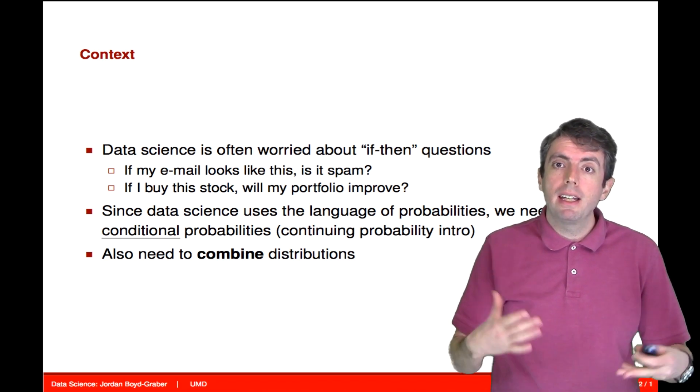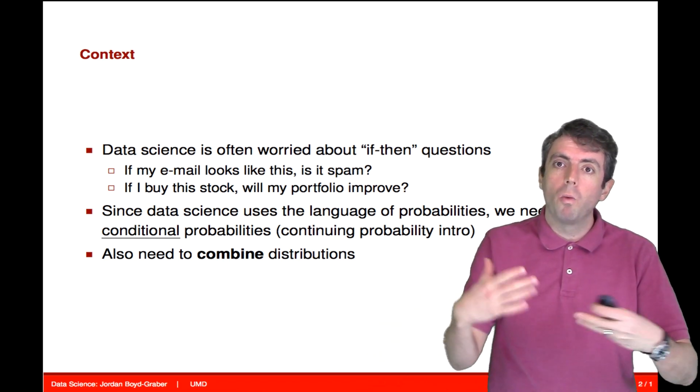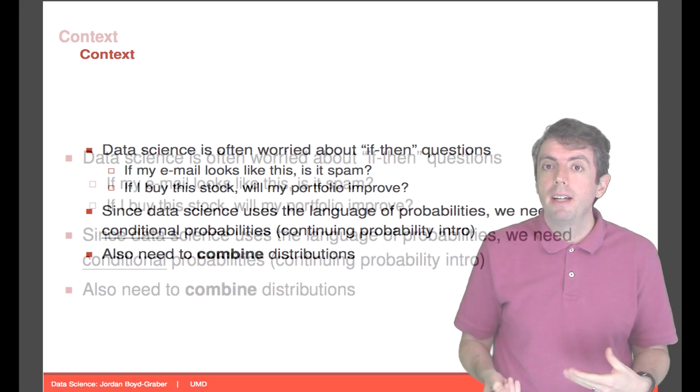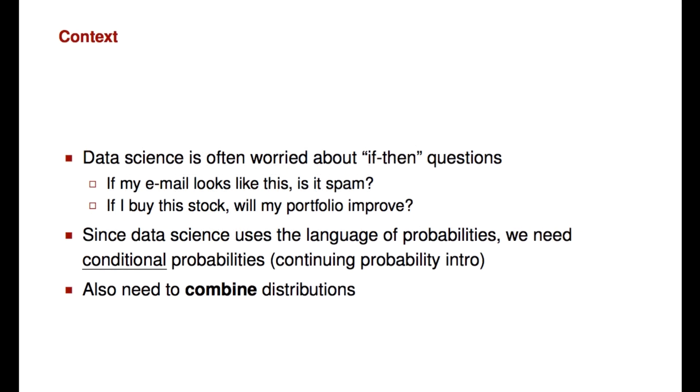For example, if I do action x, what will the world of tomorrow look like? If I write email that talks about a great deal, does that mean it will get flagged as spam? If I buy this stock, will I make more money on my portfolio? These are the kinds of questions that we hope to be able to answer with data science, but we need to be able to form these questions mathematically. And the way that we're going to do that is through the language of conditional probabilities.